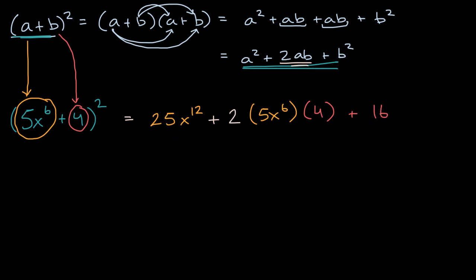And then we can simplify this. So this is going to be equal to 25x to the twelfth. 2 times 5 times 4 is 40. 2 times 5 is 10, times 4 is 40. So plus 40x to the sixth, plus 16.